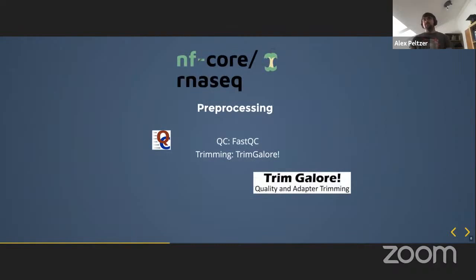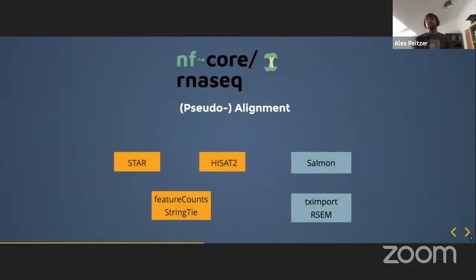The pipeline features pre-processing steps involving a quality check using FastQC and trimming with TrimGalore. The main part consists of pseudo-alignment or alignment. The Salmon pseudo-alignment part was added last summer in 2019, whereas STAR-HISAT2 and the featureCounts-StringTie part have been around for a couple of years.